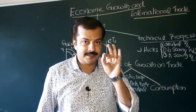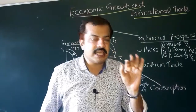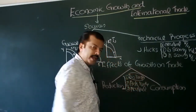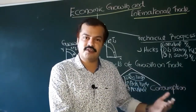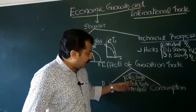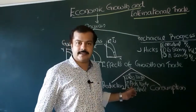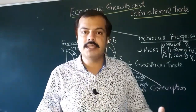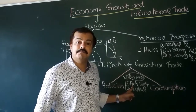Production is pro-trade when, as a result of economic growth, the production of a country's exportable commodity increases — that means more export will be possible and international trade will increase. Production is anti-trade when the production of a country's importable commodity increases domestically. If more importable commodity is produced domestically, imports will come down — that means international trade will be curtailed.